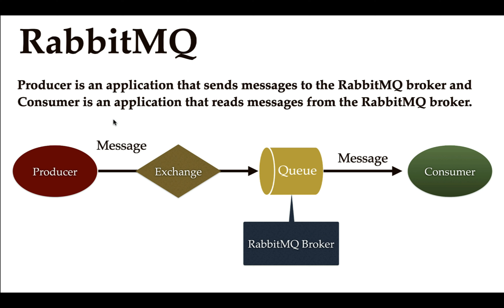RabbitMQ contains multiple components: producer, exchange, queue, and consumer. The producer produces a message and sends it to the exchange. The exchange routes that message to the queue using a set of rules, and the consumer consumes the message from the queue. Exchange and queue are part of the RabbitMQ broker, while producer and consumer can be different applications.